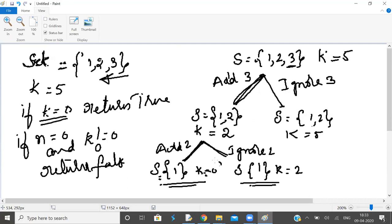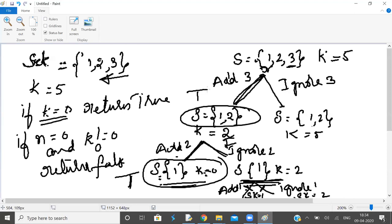Now here k equals zero, so we return true. Here again you have two options: add 1 or ignore 1. If you add 1, s is empty and k is 1. Here s is empty and k equals 2. Since s is empty, this is false, and this is false. False or false is false. But true or false is true. If this subtree is either false or true, overall true or false or true or true is true.